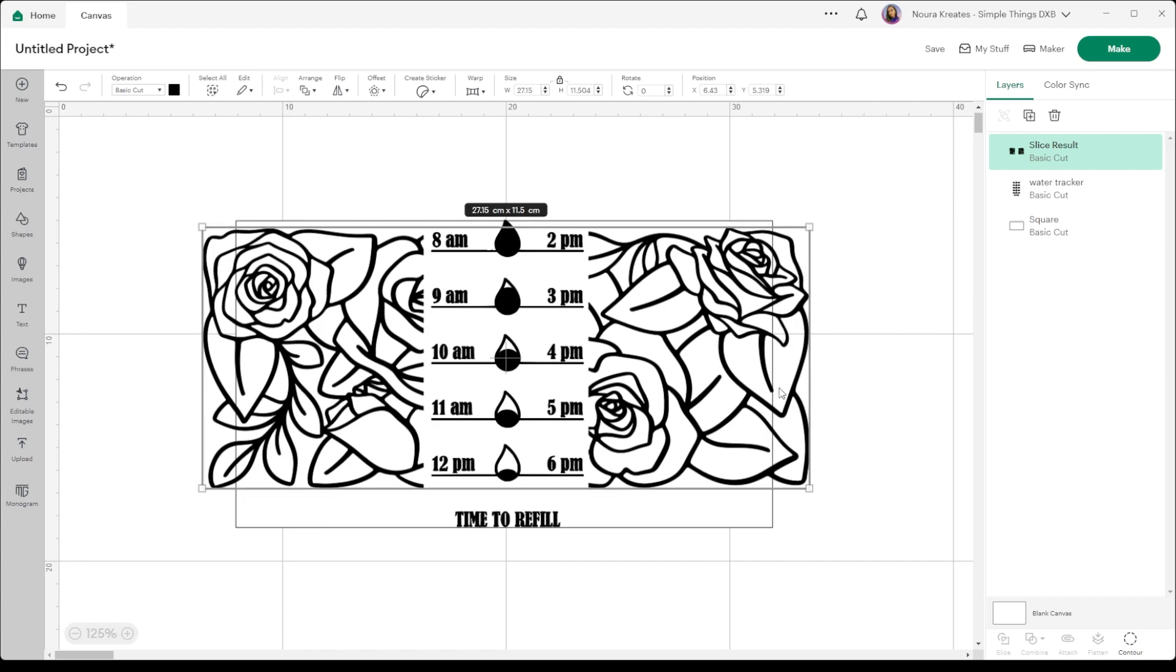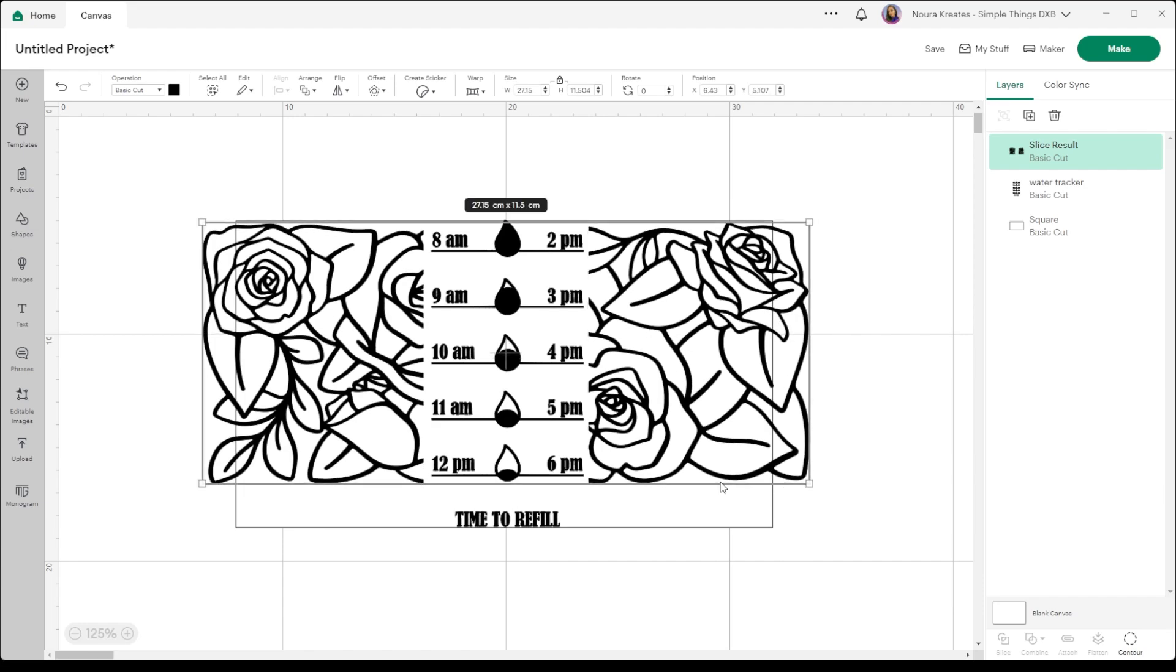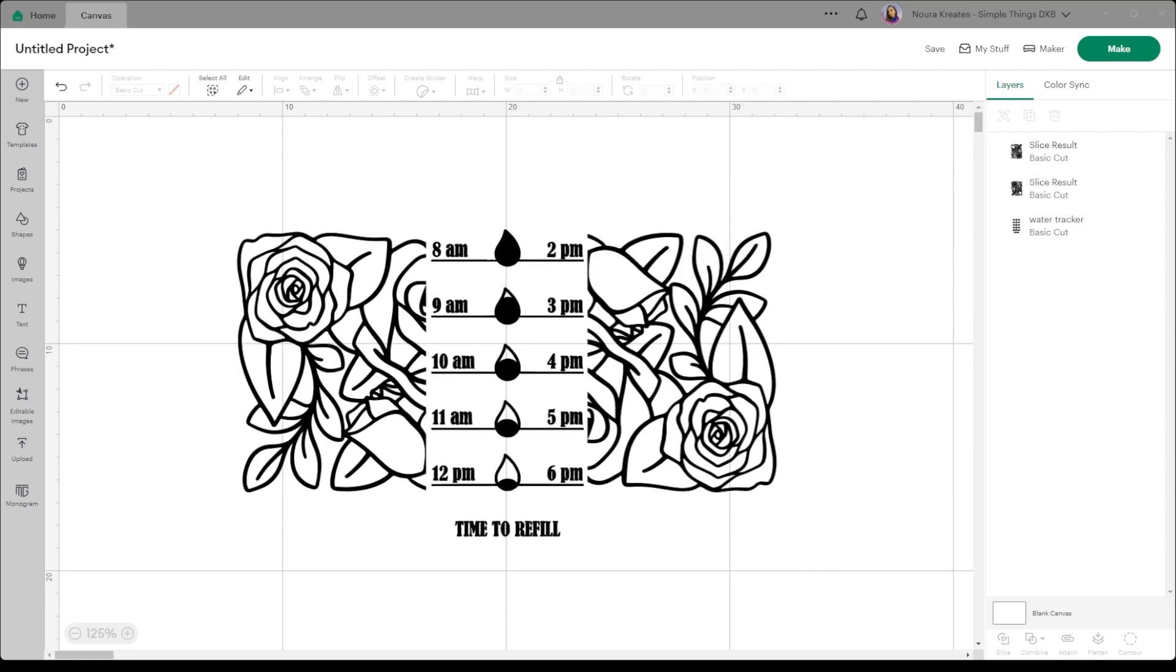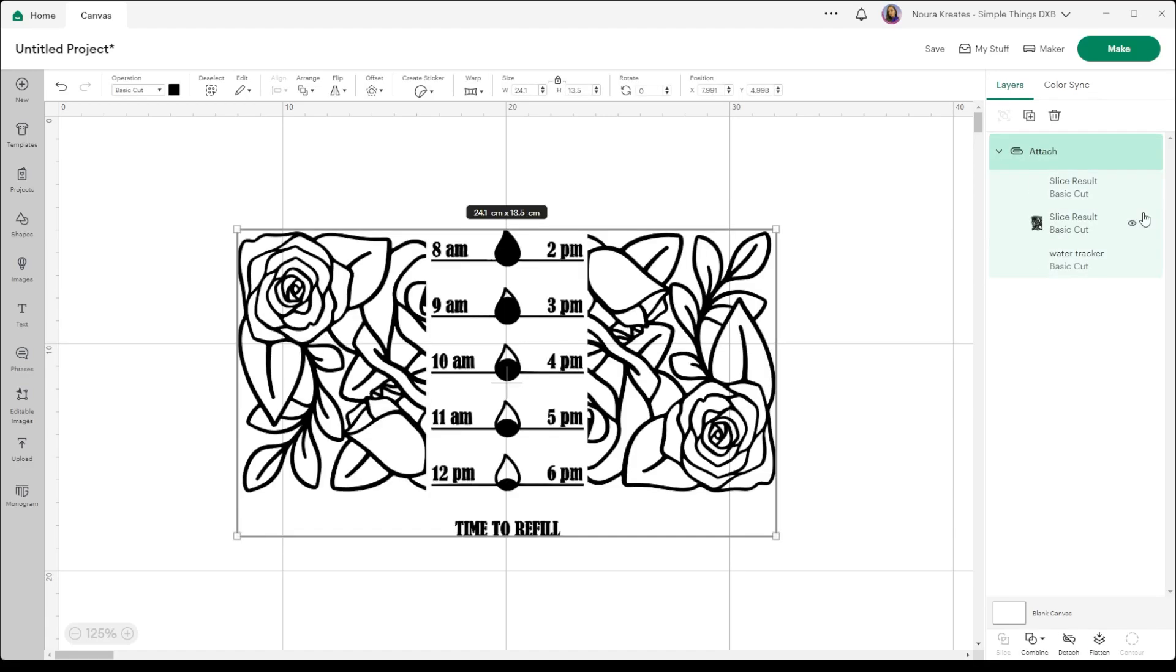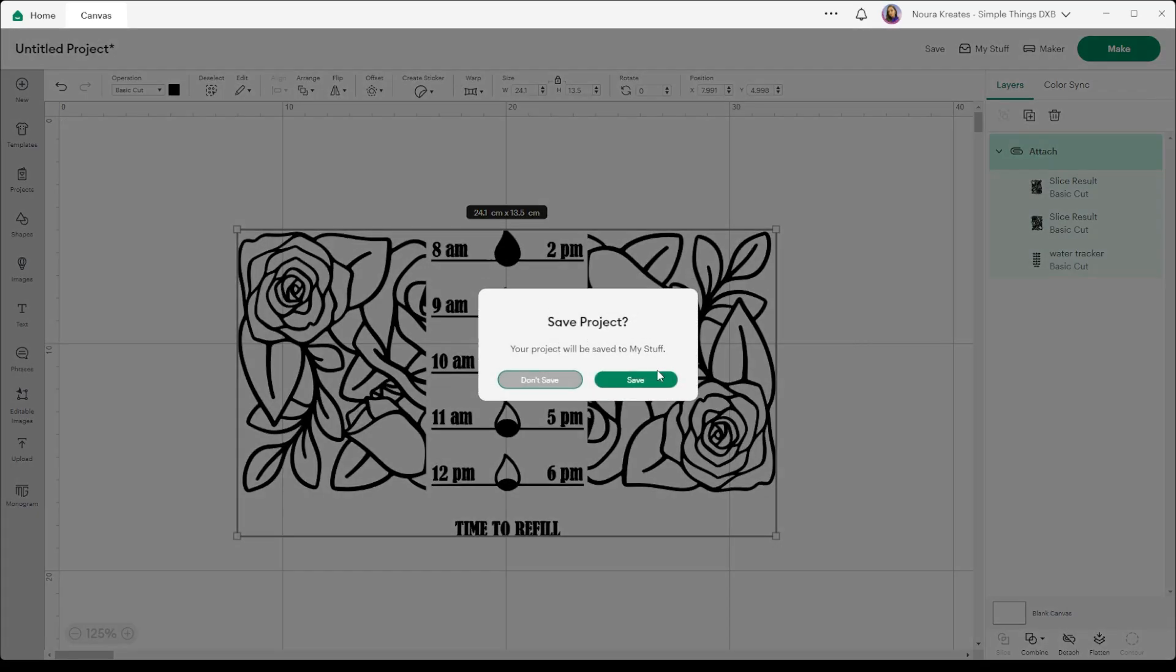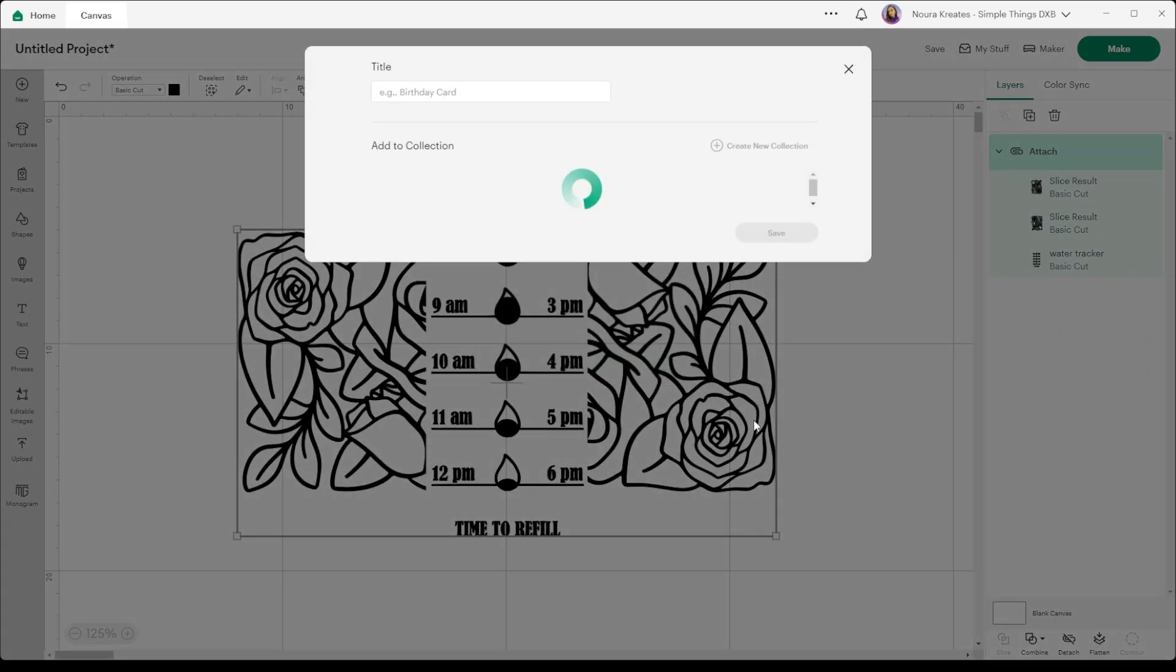And that's how I want it to look like. Now we can get rid of the box at the back. Now I'm going to attach everything and we are going to click on make it. Let's not forget to save our design.